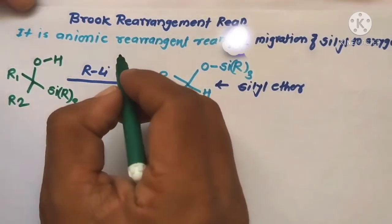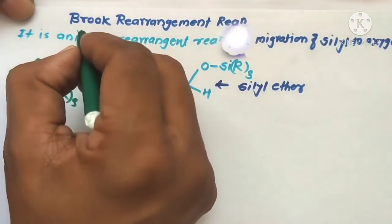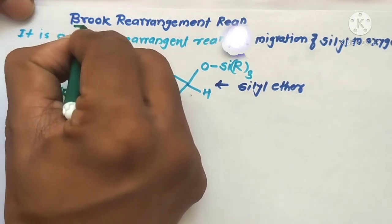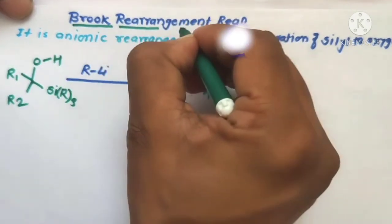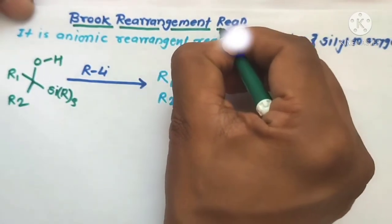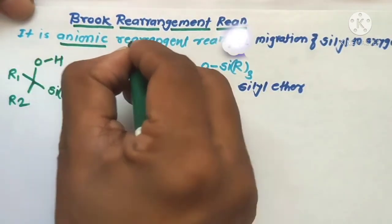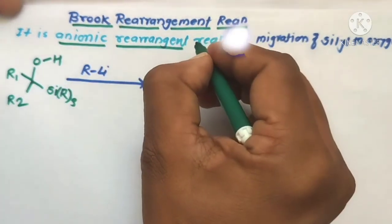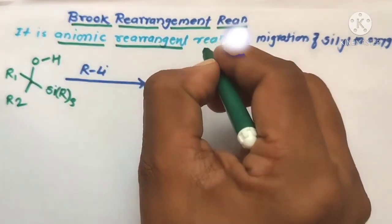Today we are going to discuss the new rearrangement reaction — Brooks rearrangement reaction. This is an example of an anionic rearrangement reaction, where there is formation of an anion followed by rearrangement.